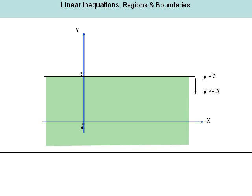Naturally, if we extend that argument, everything above the line would also be another region. But that region would be defined by the inequation y is greater than or equal to 3. The line y equal to 3, a single line, is the boundary of those two regions.